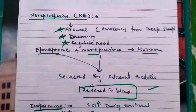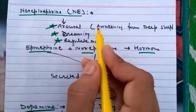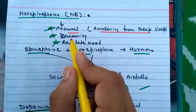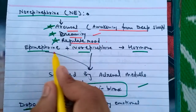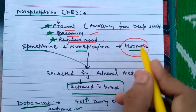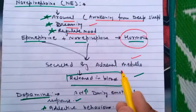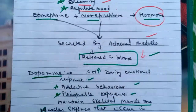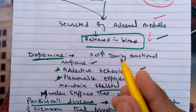Epinephrine and norepinephrine cause arousal — awakening from deep sleep — and regulate mood. They are hormonal substances created by the adrenal medulla and are directly released into the blood.